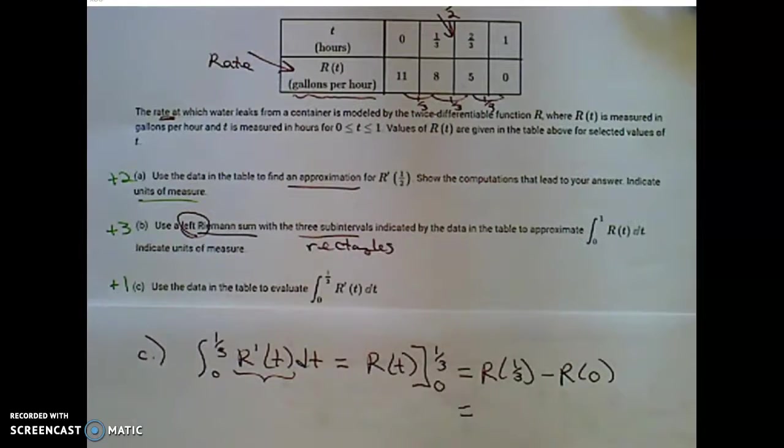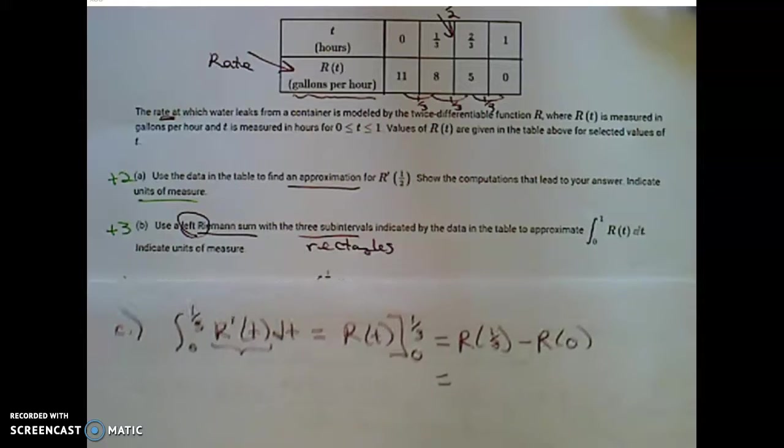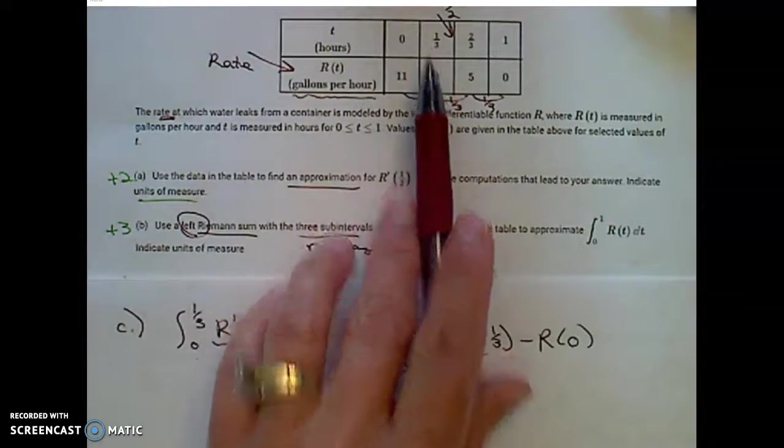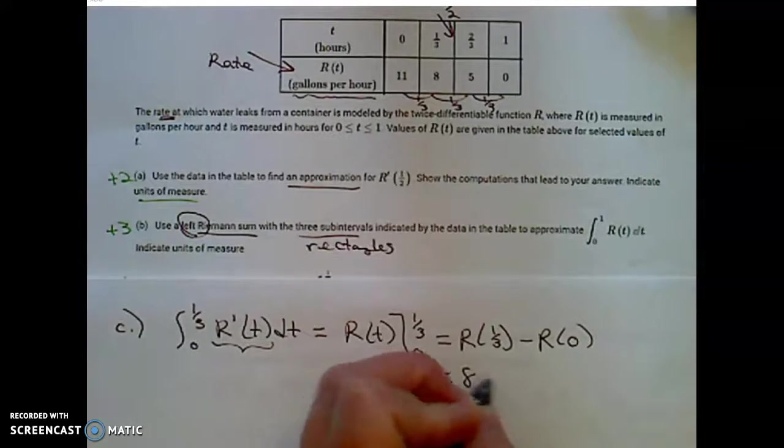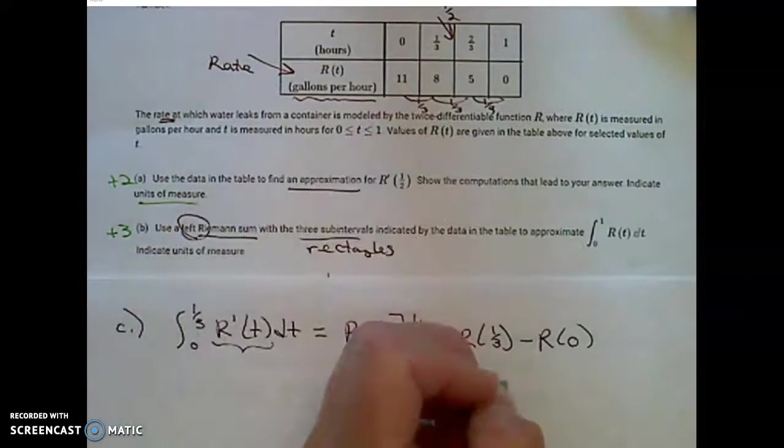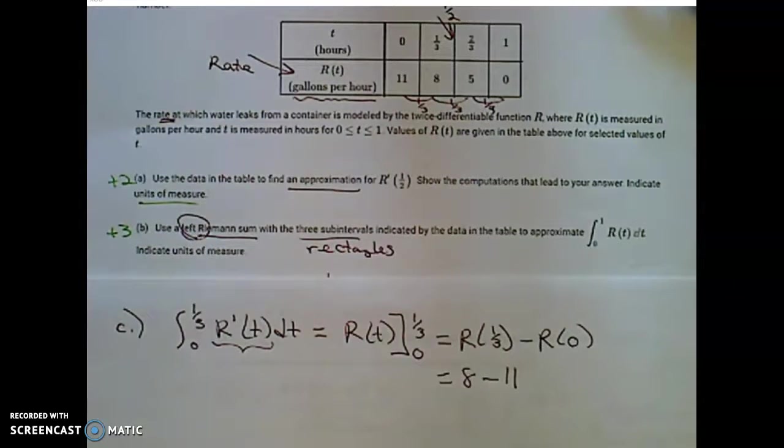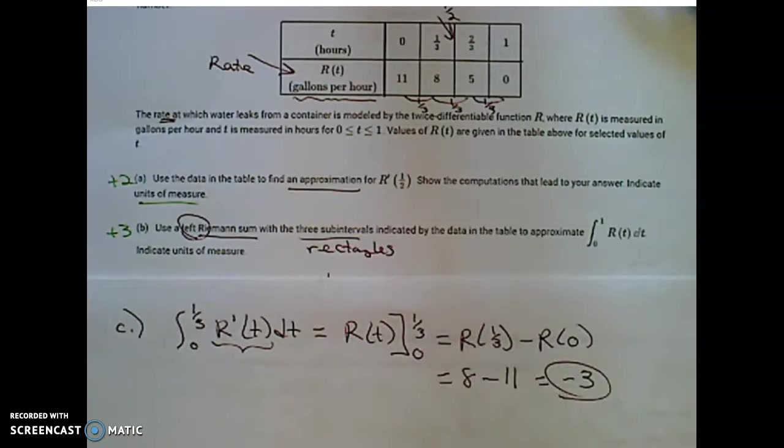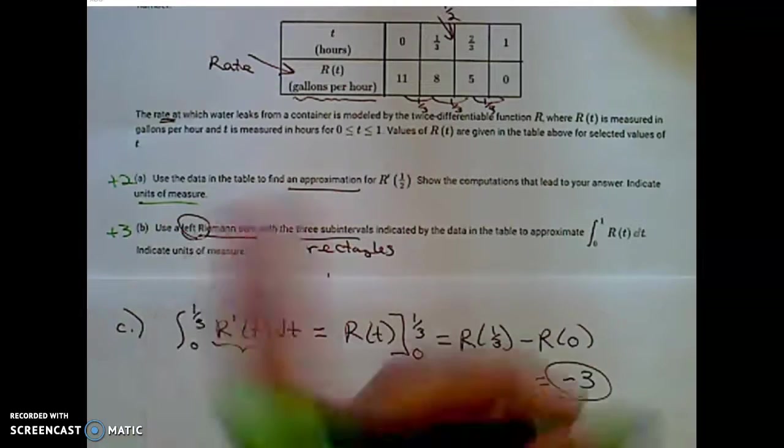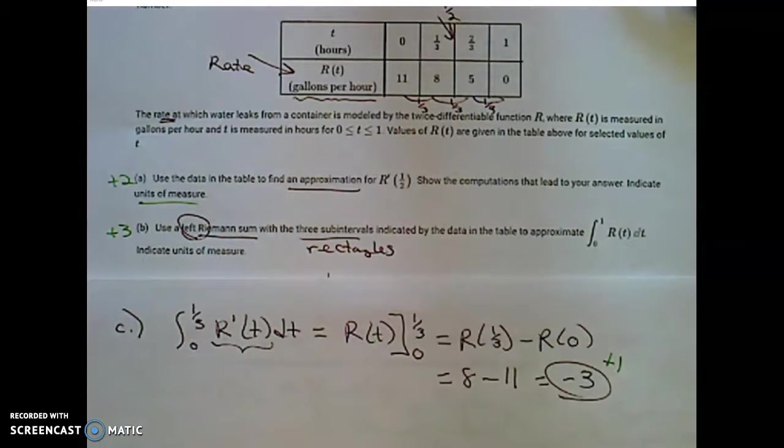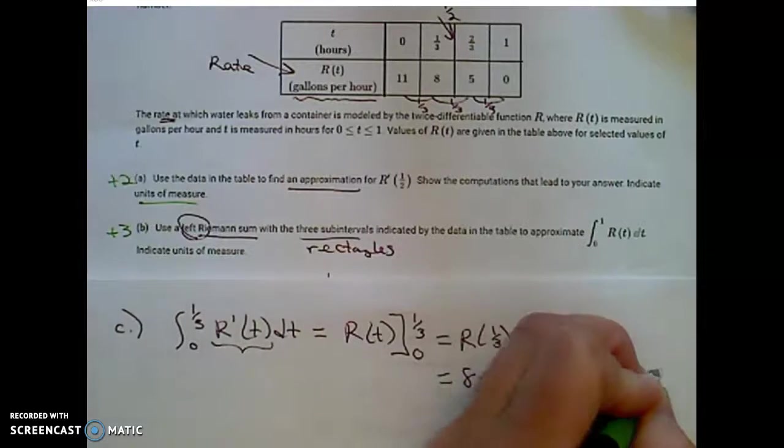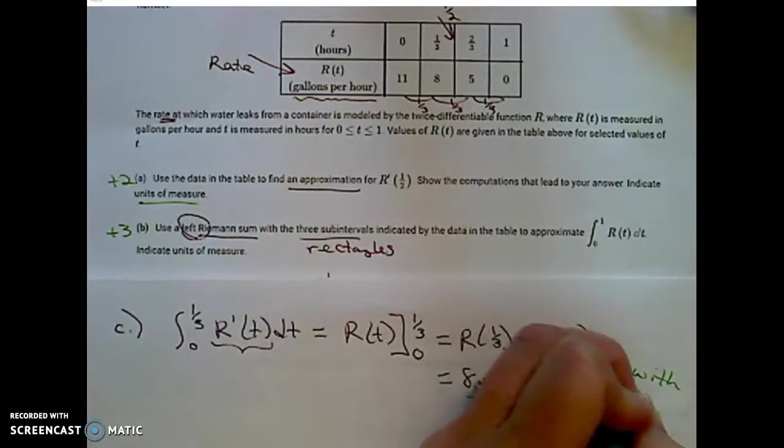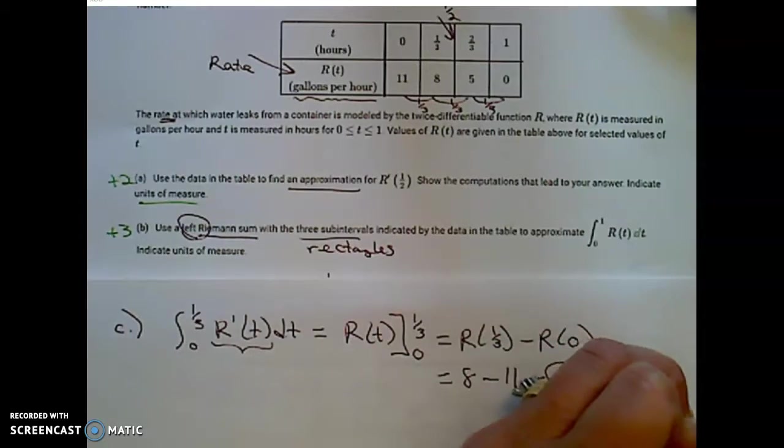And now I have to use table values for the value of that integral. And those table values are R of 1 third, which is 8, minus R of 0, which is 11. And I get negative 3. This is a one point problem. You get one point for that correct answer as long as you have work with supporting work.